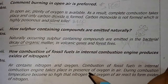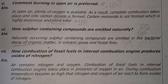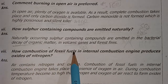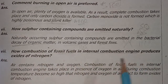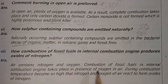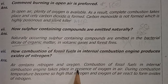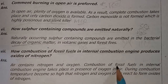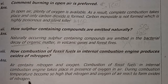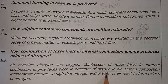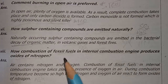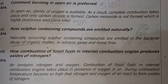The last question: How does combustion of fossil fuels in an internal combustion engine produce oxides of nitrogen? Fossil fuels burn in the presence of oxygen from air. During combustion, the temperature becomes so high that nitrogen and oxygen in the engine react together to form nitrogen oxides — NOx. This is how nitrogen oxides are produced as a result of combustion.